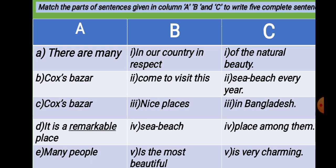Let us start practice. You see the first one. There are three columns here. In column A: A — there are many; B — Cox's Bazar; C — Cox's Bazar; D — it is a remarkable place; E — many people. In column B: 1 — in our country in respect; 2 — come to visit this; 3 — nice places; 4 — sea beach; 5 — is the most beautiful. In column C: 1 — of the natural beauty; 2 — sea beach every year; 3 — in Bangladesh; 4 — place among them; 5 — very charming. You have to match the parts of sentences given in column A, B, and C to write five complete sentences.